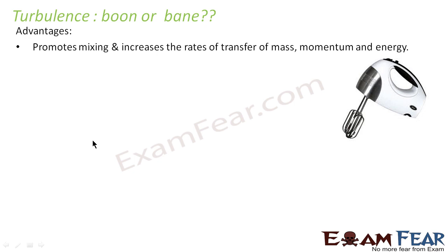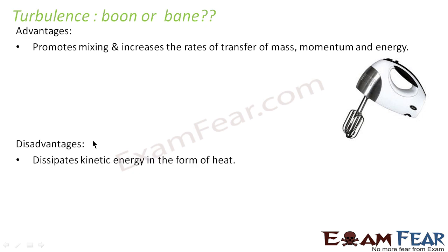Turbulence means the fluid particles move randomly in all directions — there is no fixed path along which the particles have to move. However, turbulence also has its disadvantages: it dissipates kinetic energy in the form of heat. Whenever there is mixing of different particles, the particles collide with each other and heat is dissipated, which is a waste of energy.